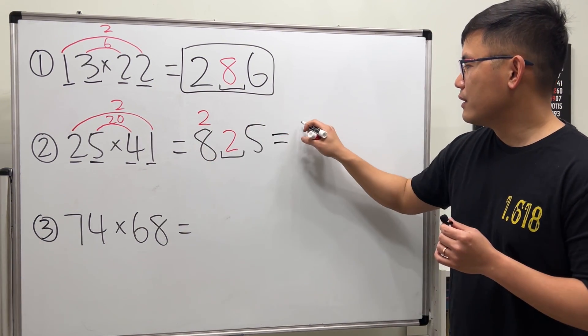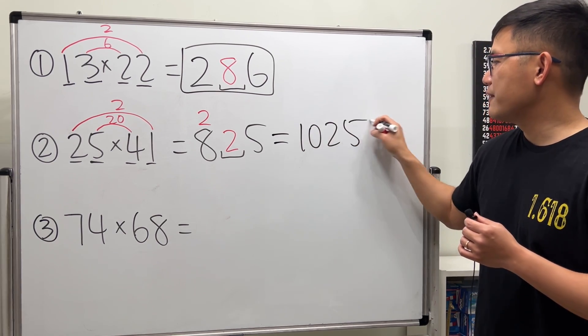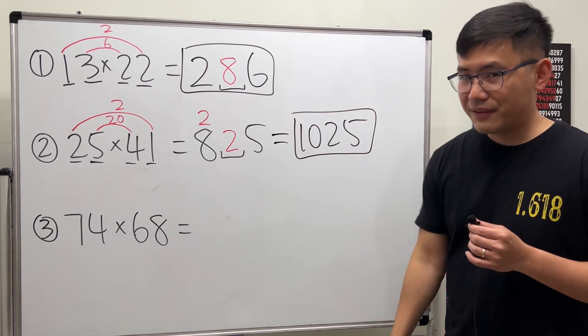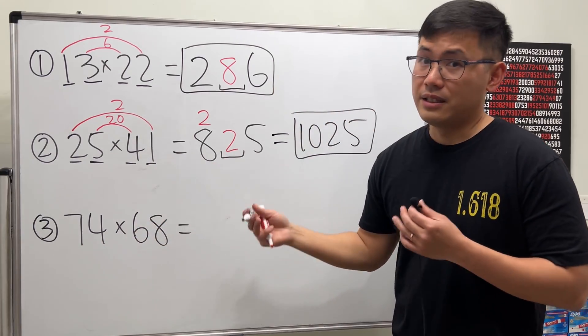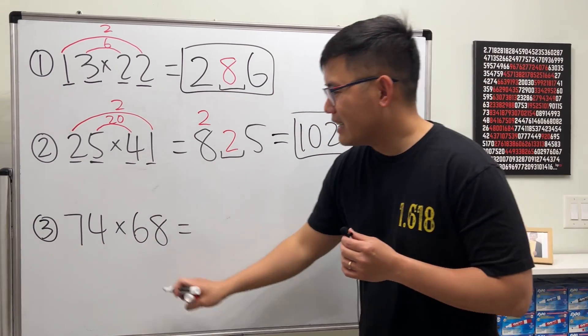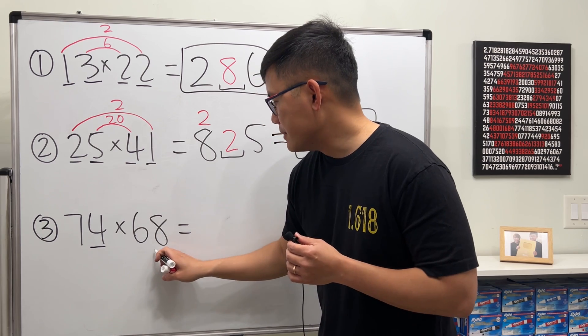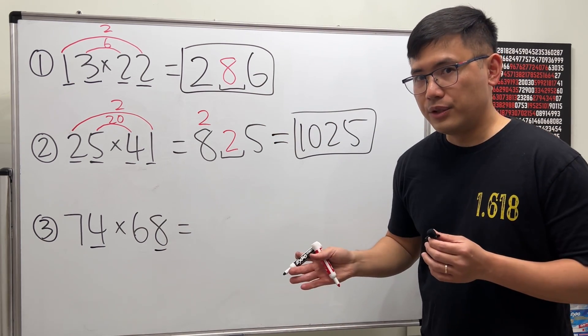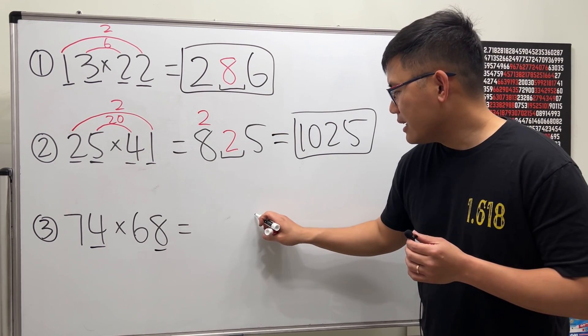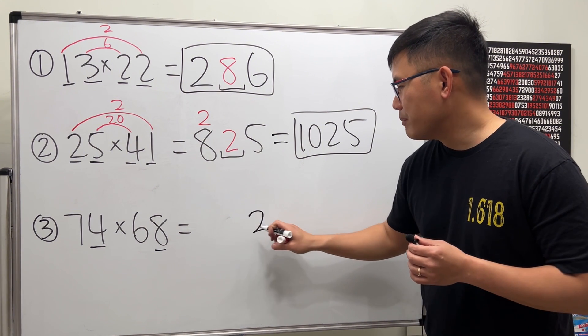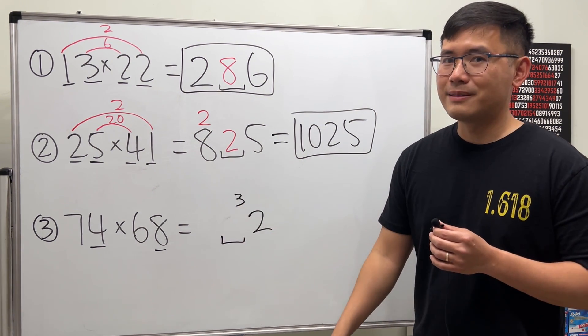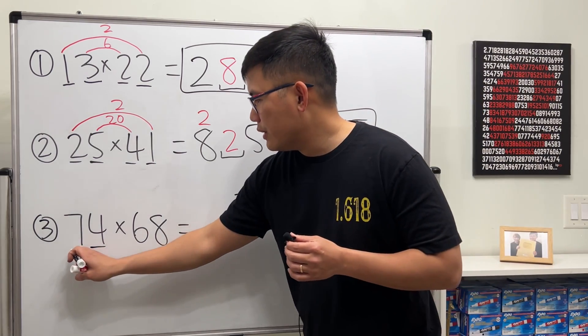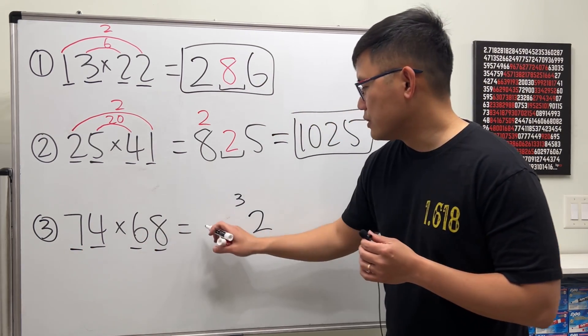Lastly, 74 times 68, a big number but still works. First, 4 times 8 is 32. Well, again the last digit is 2, but then we have to carry over the 3. This right here, this right here, it's only one spot. Then we do 7 times 6 which is 42.